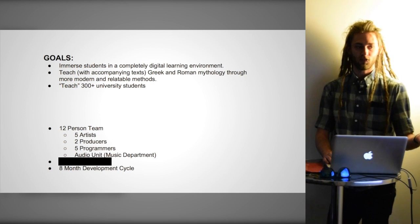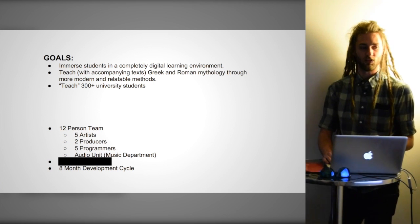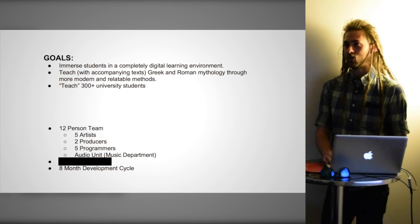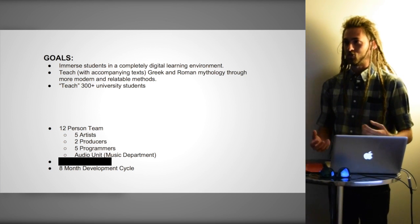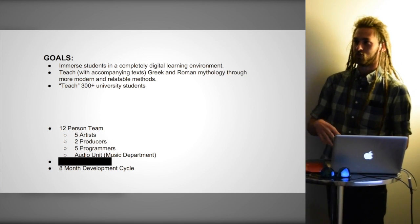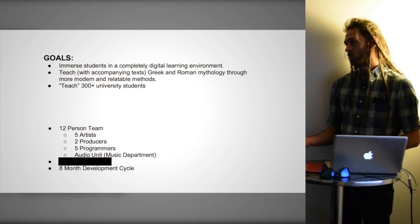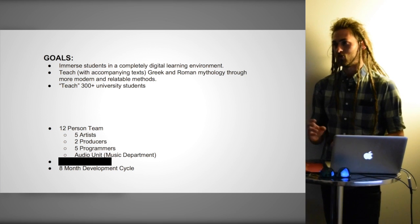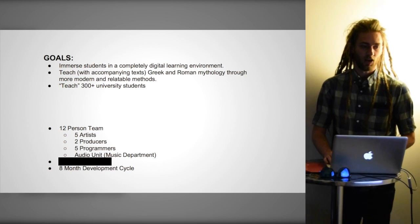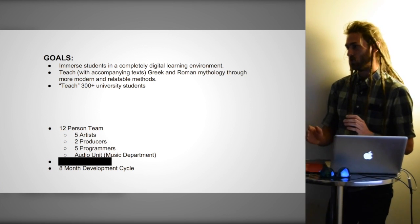We had a 12-person team with five artists — I was one of the artists. We had two producers, which was Dr. Frederick and his teaching assistant, and five programmers. We also had an audio unit from the music department of the university. So we have an original dynamic score in the game — as you play through certain levels, the audio will change as suspense builds and other tracks fade out. This was before Unity 5 came out with their new audio tool, so since this was all created in Unity 4, it all had to be programmed for our game. We had an eight-month deadline from conceptualization to finished product.